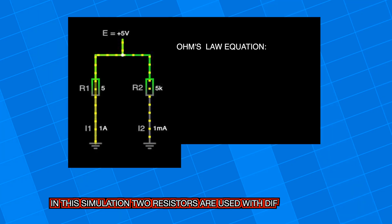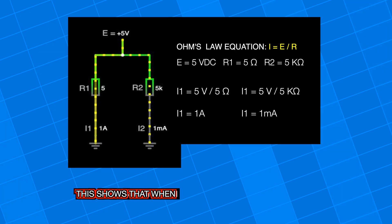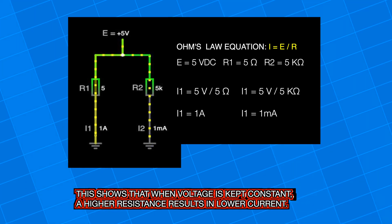In this simulation, two resistors are used with different values. This shows that when voltage is kept constant, a higher resistance results in a lower current.